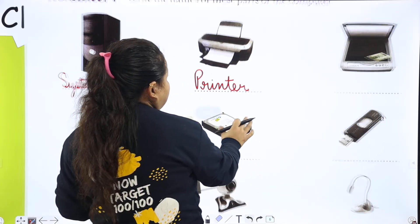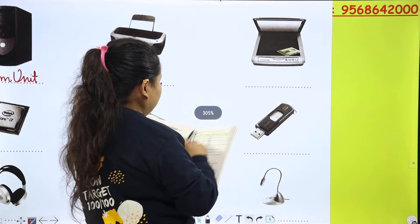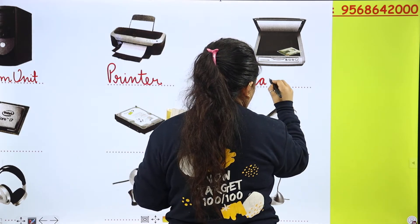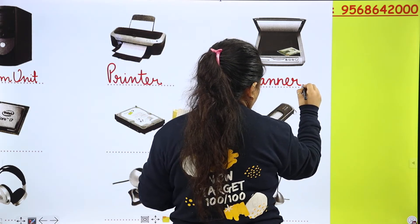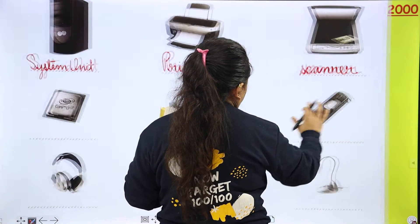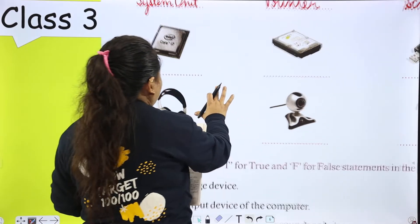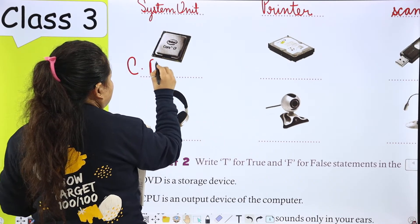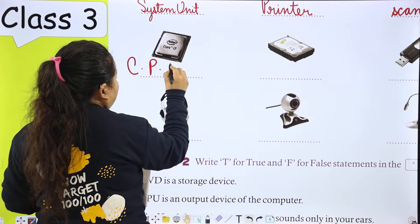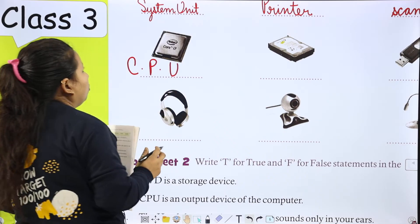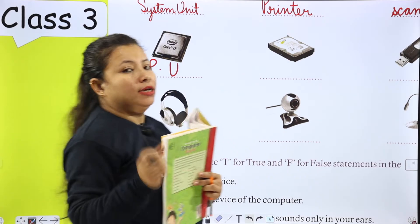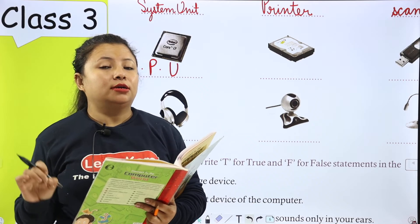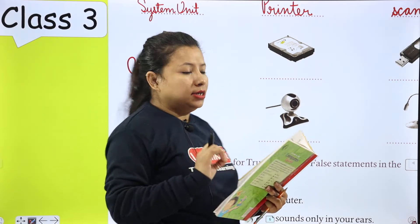Next is scanner. Then we have the CPU — central processing unit. It is not an input device, it is not an output device; it is a processing device.